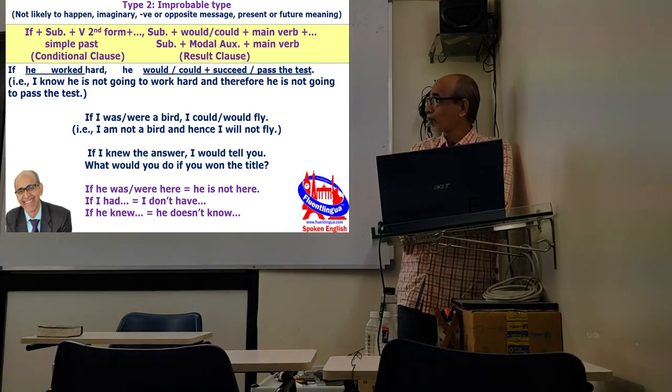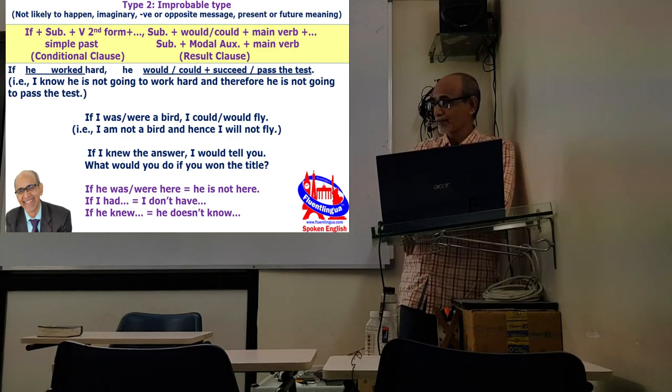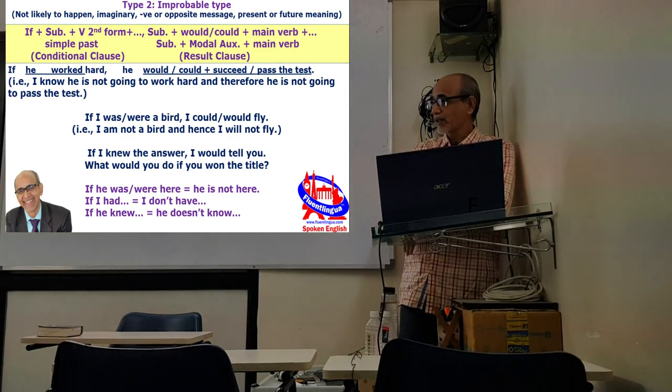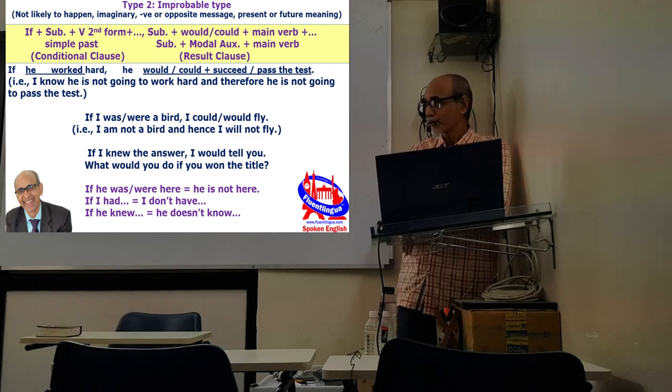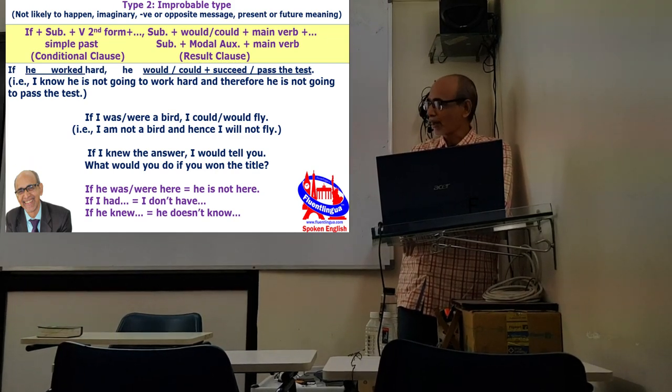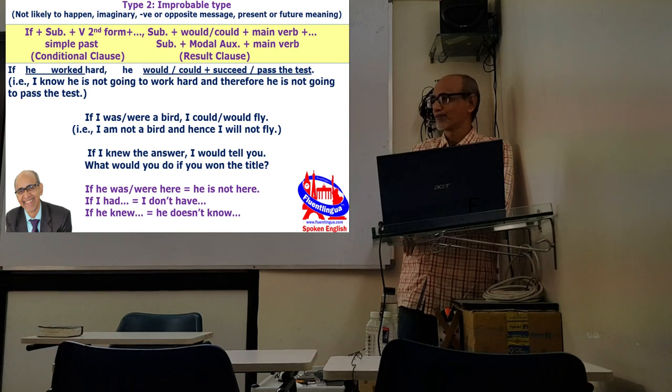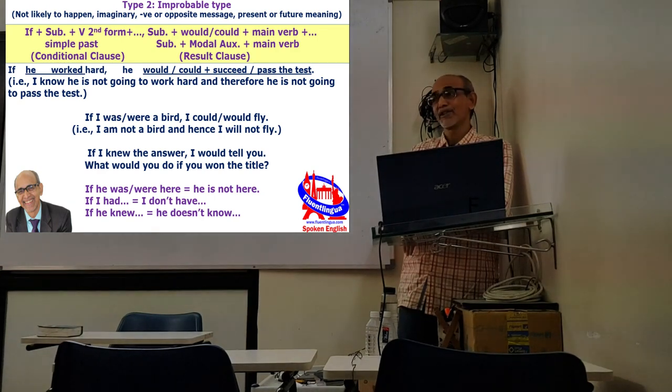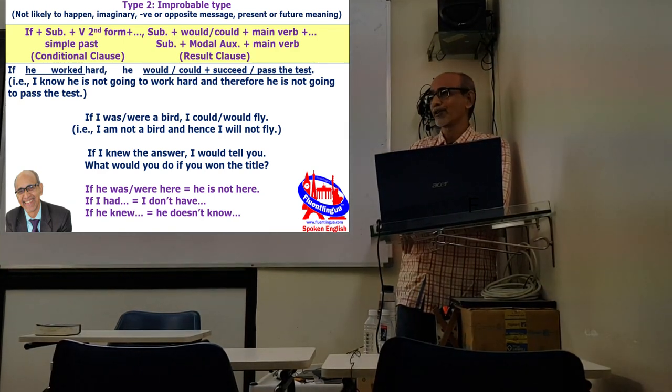That is type 2, improbable imaginary condition conveying a negative, negative in the sense opposite message. If I had means I do not have. If I knew means I do not know. If he was here means he is not here. If he was here, he would help me, but he is not here. In that sense, opposite meaning.